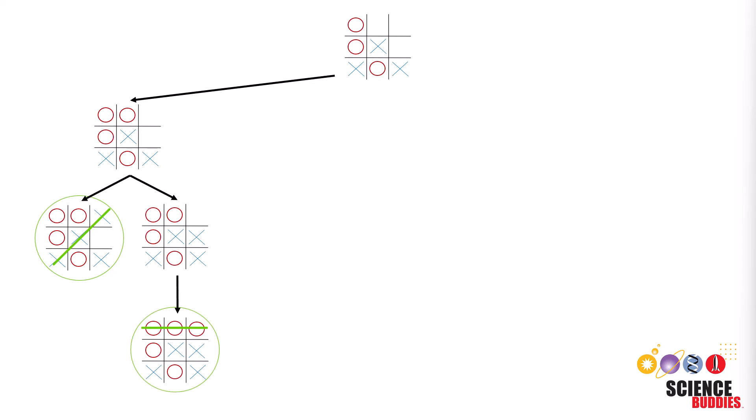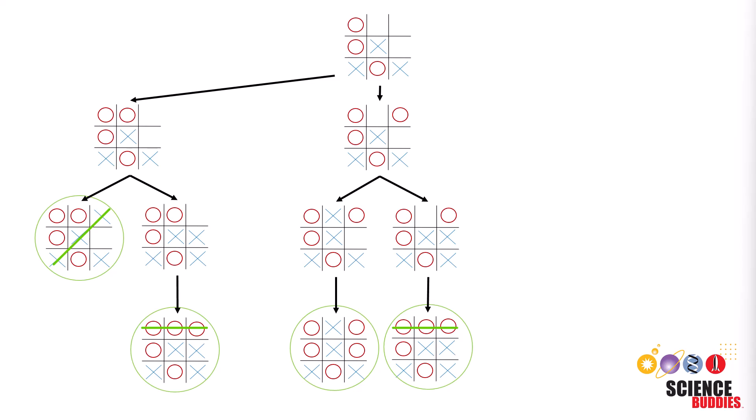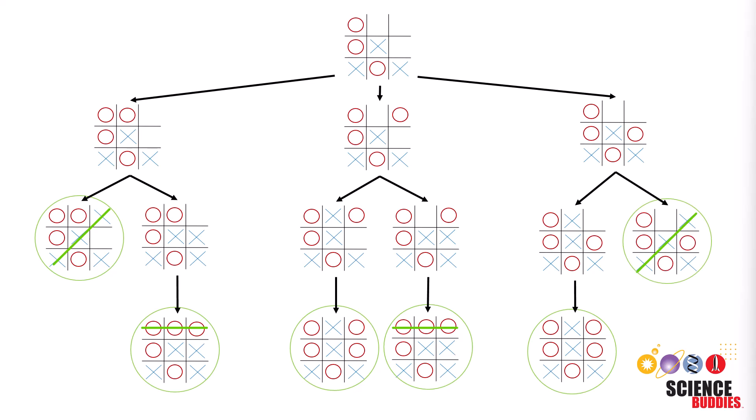With the base case set in place, the algorithm then starts exploring the game tree recursively. Every branch represents a possible move, and every node signifies a potential board state. At each turn, Minimax alternates between players. As it navigates through the tree, it explores all conceivable moves, each time considering the potential outcomes. This process is similar to a player thinking several moves ahead, considering the consequences of each decision.